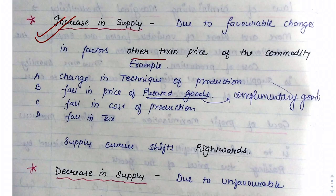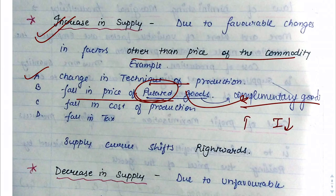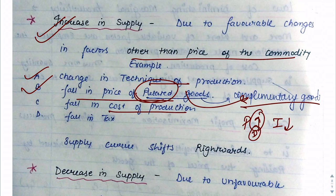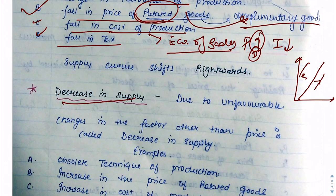Increase in supply is caused by factors other than price. A favorable change in production technology will increase supply. A fall in the prices of related complementary goods increases demand and hence the supplier increases supply. If the cost of production falls due to economies of scale, we can supply more. A fall in taxes also increases supply. In all these cases, the supply curve shifts to the right. Decrease in supply shifts the curve to the left — these are opposite factors.